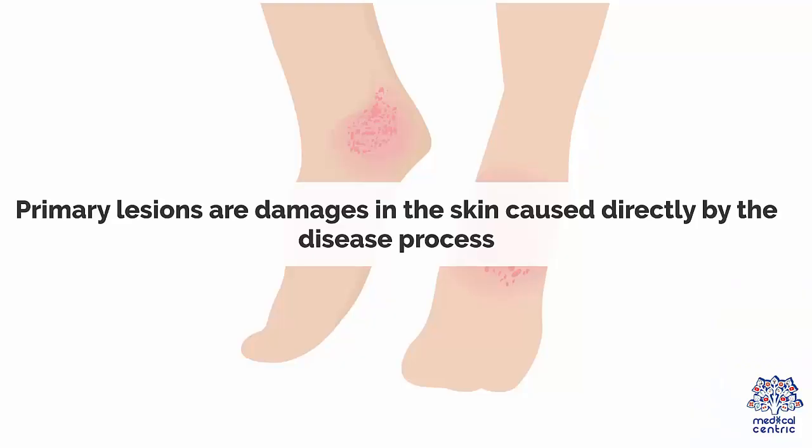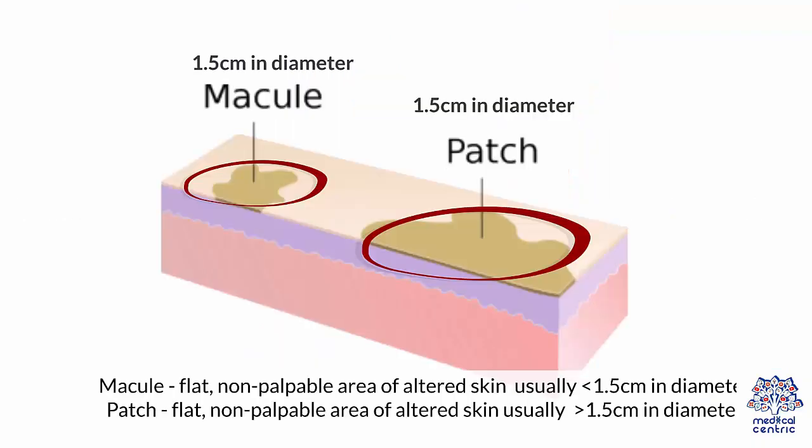Primary lesions are damages in the skin caused directly by the disease process. Macule is a flat, non-palpable area of altered skin, usually less than 1.5 cm in diameter. Patch is a flat, non-palpable area of altered skin, usually greater than 1.5 cm in diameter.